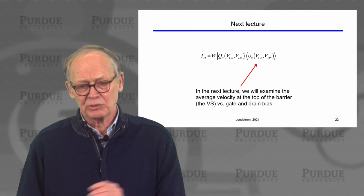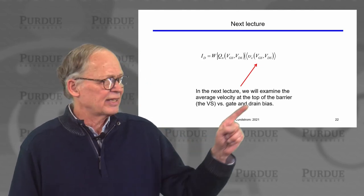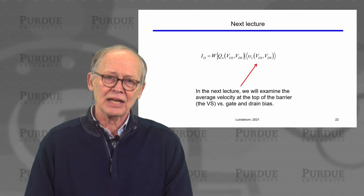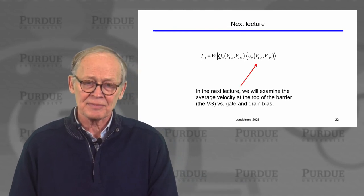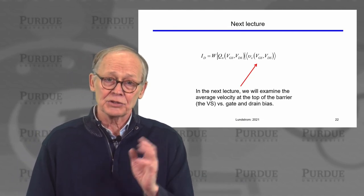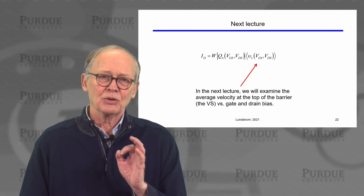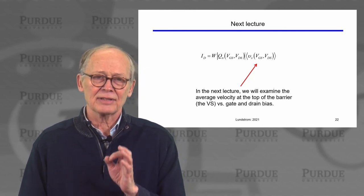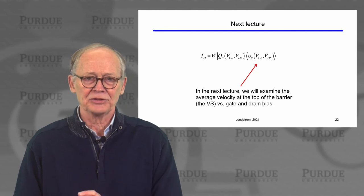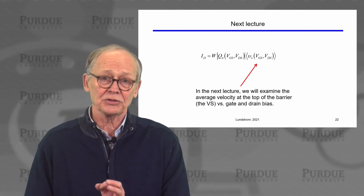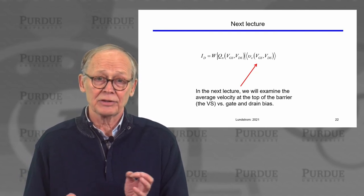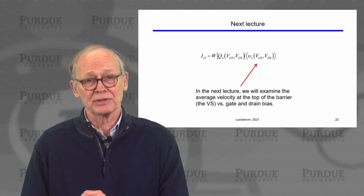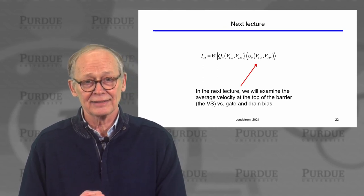Before we continue, we should take a closer look at the velocity versus drain voltage at the virtual source, because it's quite interesting to ask how the drain current saturates in this ballistic MOSFET, given that there is no scattering at all. We'll discuss how that drain current saturation occurs in the next lecture.